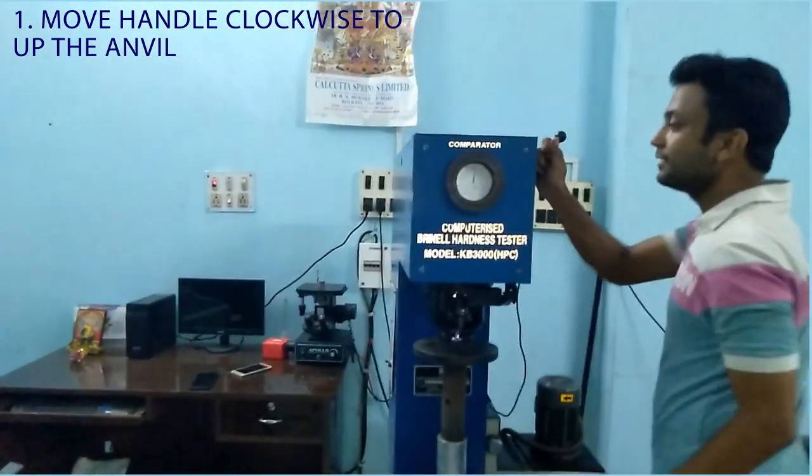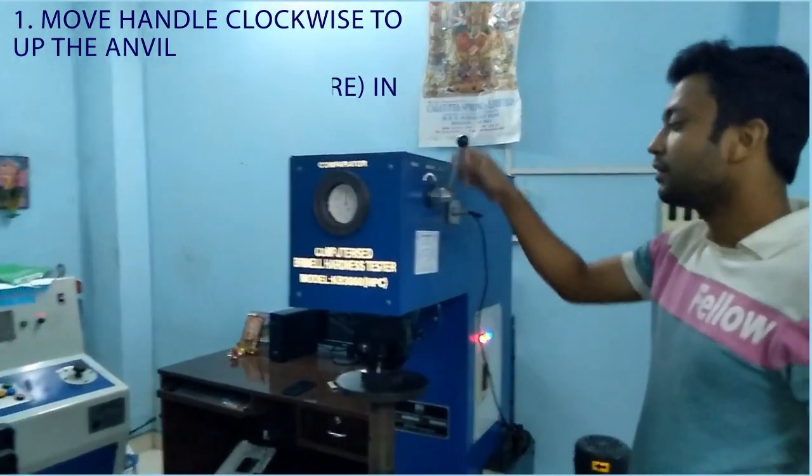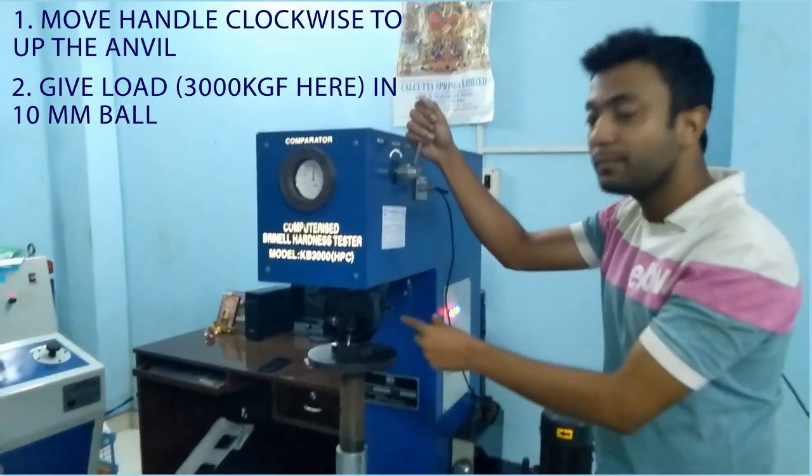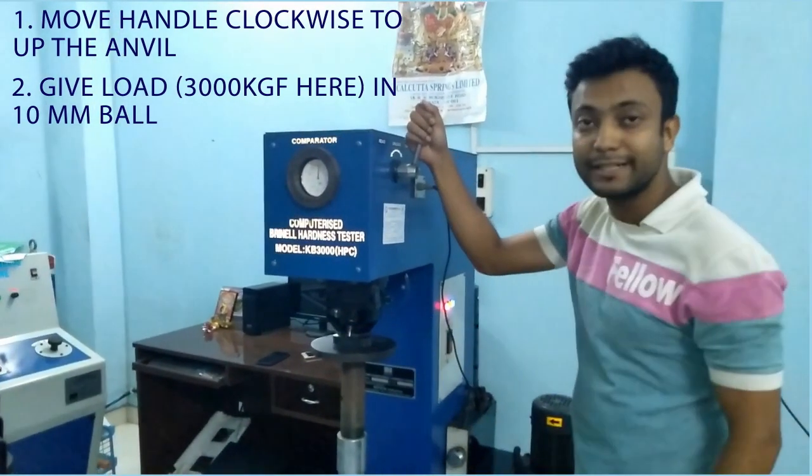We have to move the end wheel clockwise to up the end wheel and keep it in position. Now, we can see in the liquid we should unload position. I am going to give load of 3000 kg farad in 10 mm ball diameter.